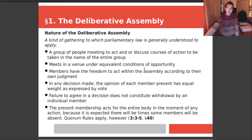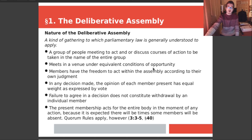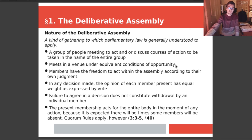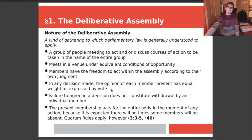They meet in a venue under equivalent conditions of opportunity. When we get into the four basic rights of a member of a deliberative assembly or a board or committee, equivalent conditions allows for everybody to know who is voting on what, allows everybody to make motions on the floor, and allows people to hear and respond to debate in an equal fashion. It's really important that people have the right to know and respond in real time. Members have the freedom to act within the assembly according to their own judgment — they can say yay, nay, or abstain at their own pleasure. In any decision, each member's vote has equal weight: in a group of five, every person's vote equals one; in a group of eight, each person's vote is one-eighth of the total.